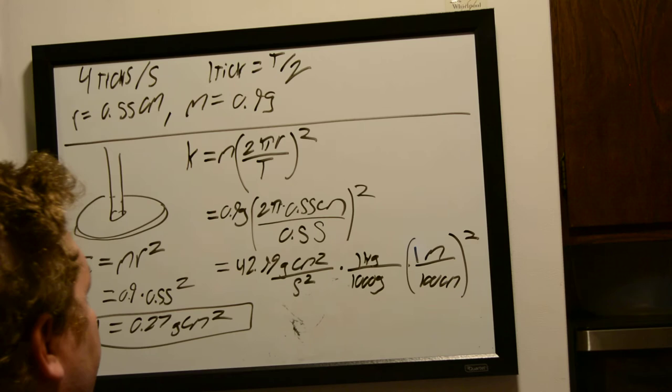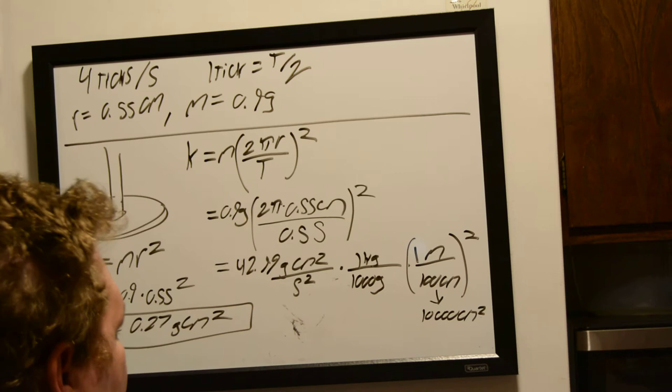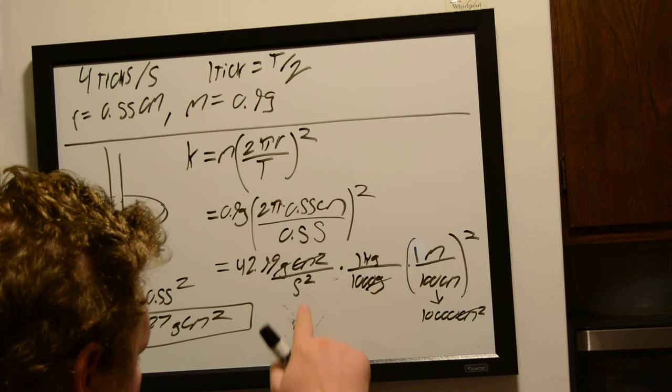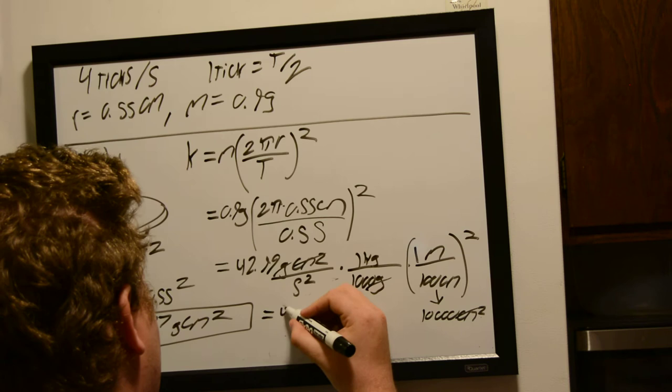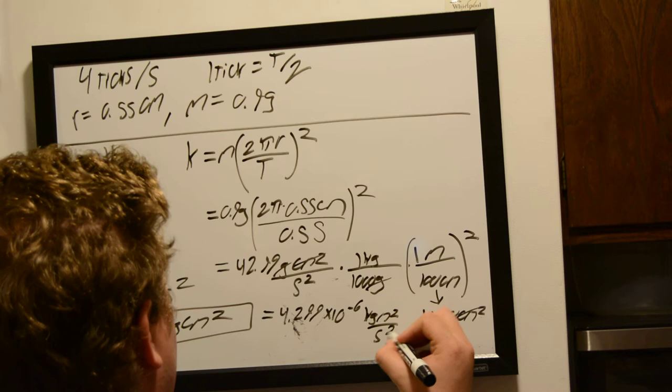So then this will actually turn into 10,000 centimeters squared per meter squared. And then, so, we have our grams canceling out, our centimeters squared canceling out, and we're left with kilogram meter squared per second squared. And then, we do that math right there, and that's going to come out to be 4.299 times 10 to the negative 6 kilogram meter squared per second squared.